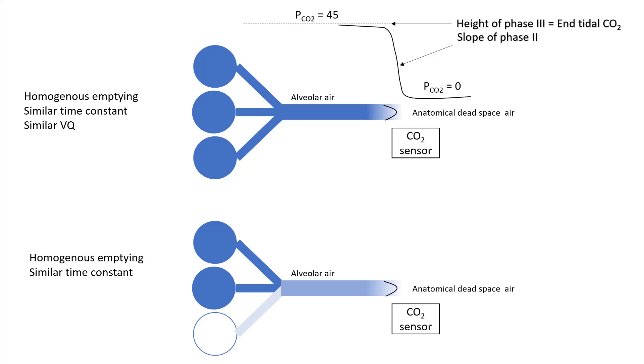The junction between the anatomical dead space and alveolar air remains similar, so your CO2 level rises rapidly. However, it will not be able to achieve PCO2 45 because the alveolar air gets diluted by the dead space air. So the slope of phase two remains the same while the height of phase three drops down.